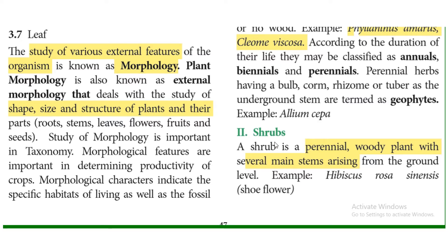Next, shrubs. A shrub is a perennial woody plant with several main stems arising from the base. Shrubs show perennial growth and are medium-sized plants. Examples include hibiscus and roses.